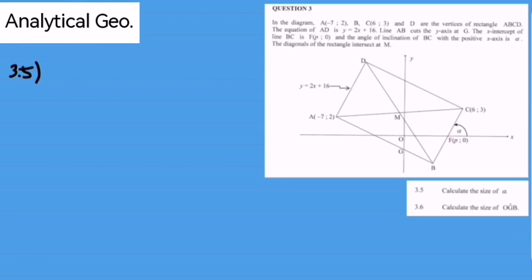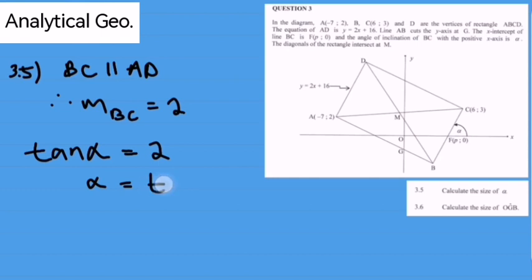Alpha is the angle of inclination of line BC, and since we know the gradient of BC is the same as the gradient of AD because they are parallel lines, so using the formula tan alpha equal to the gradient, we can substitute 2 for our gradient and calculate alpha as 63.43 degrees.